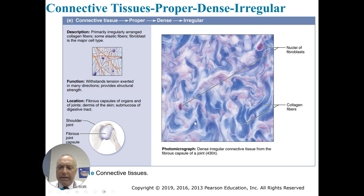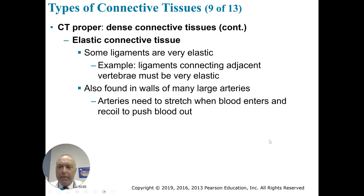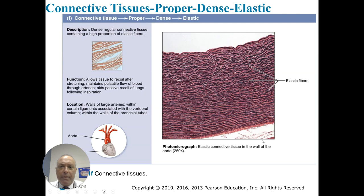Dense irregular connective tissue is found in the shoulder joint fibrous capsule, fibrous capsule of organs and joints, the skin, and the submucosa of the digestive tract. Elastic fibers are also dense and form a wavy pattern — this is elastin — and they allow stretch and recoil, as you would see in a large artery.